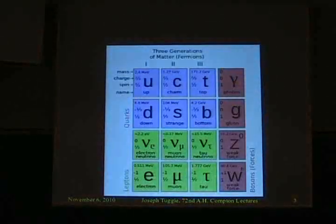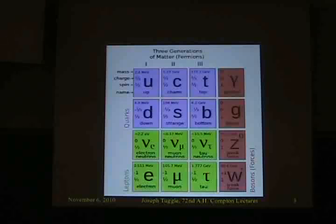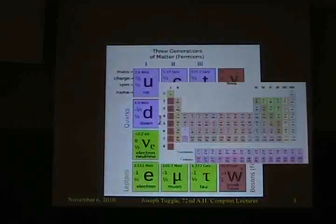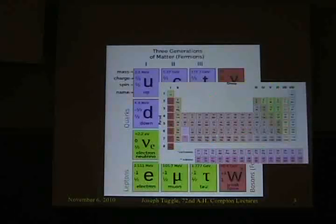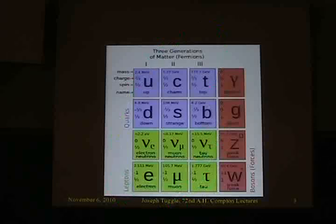This table shows all of the fundamental particles we know about — everything that's been discovered up till now. Arranged this way, it might remind you of another table of what was previously thought to be fundamental particles: the periodic table of the elements. Our version in particle physics is a lot simpler. There's not hundreds of things — we have 12 bits of matter, and then we have these guys that correspond to forces.